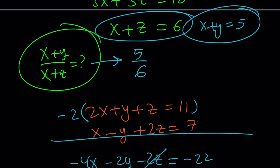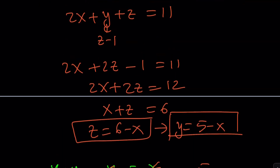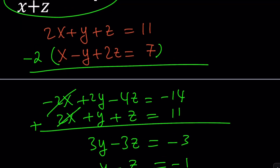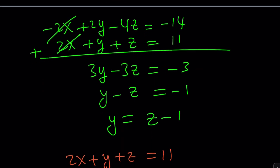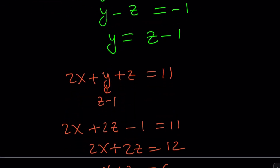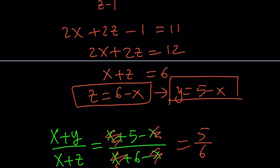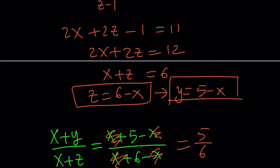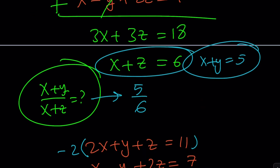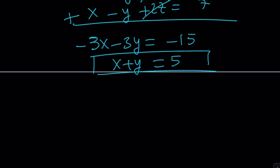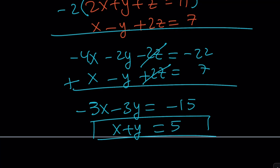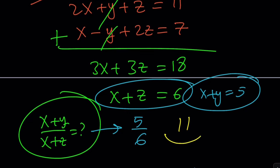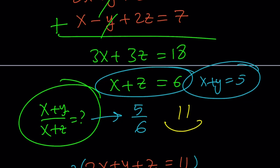With the first method, I avoided getting x plus y and x plus z directly — instead I solved for y and z in terms of x, then substituted. The second method found x plus z and x plus y directly by strategic elimination. Both give 5 over 6. That's pretty much it — this brings us to the end of this video. Thank you for watching. Please comment, like, and subscribe. I'll see you next time. Until then, be safe, take care, and bye-bye.